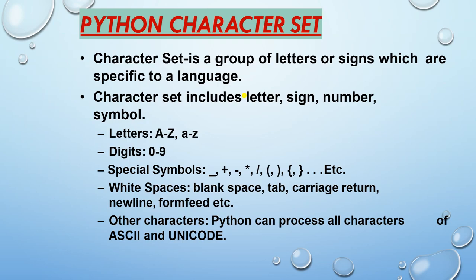The character set includes letters, signs, numbers, and symbols. In letters we include capital letters and small letters. In digits: 0 to 9. In special symbols we include underscore, plus, minus, multiply, etc. In white spaces we include blank space, tab, carriage return, new line, form feed, etc. In other characters we include the ASCII characters and the Unicode characters.